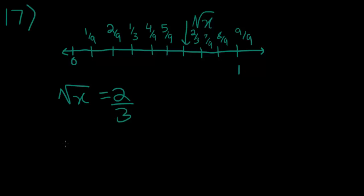So, how do we get x? We square both sides. The square of the square root of x is just x, which is equal to 2 squared, which is 4 over 3 squared, which is 9. And, that is the correct answer.